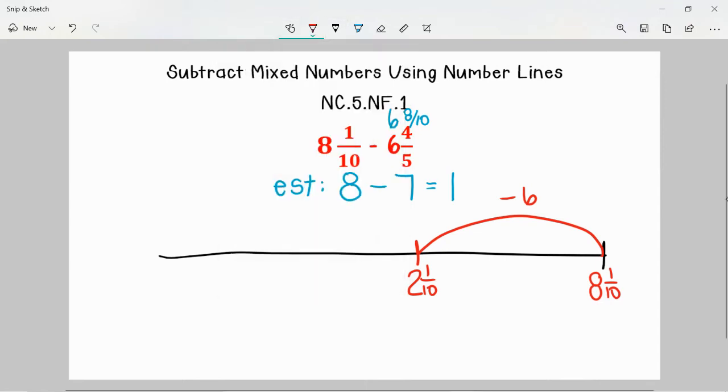So now to continue the subtraction, I am at 2 and 1 tenths. I think it would be easy if I break down this 8 tenths rather than just trying to subtract all 8 tenths at once. I know if I subtract 1 tenths I would be at exactly 2 wholes and I would have 7 more tenths to subtract. Now for some people subtracting 7 tenths all at once might make sense and be able to be done. For others we may need to break that down a little bit.